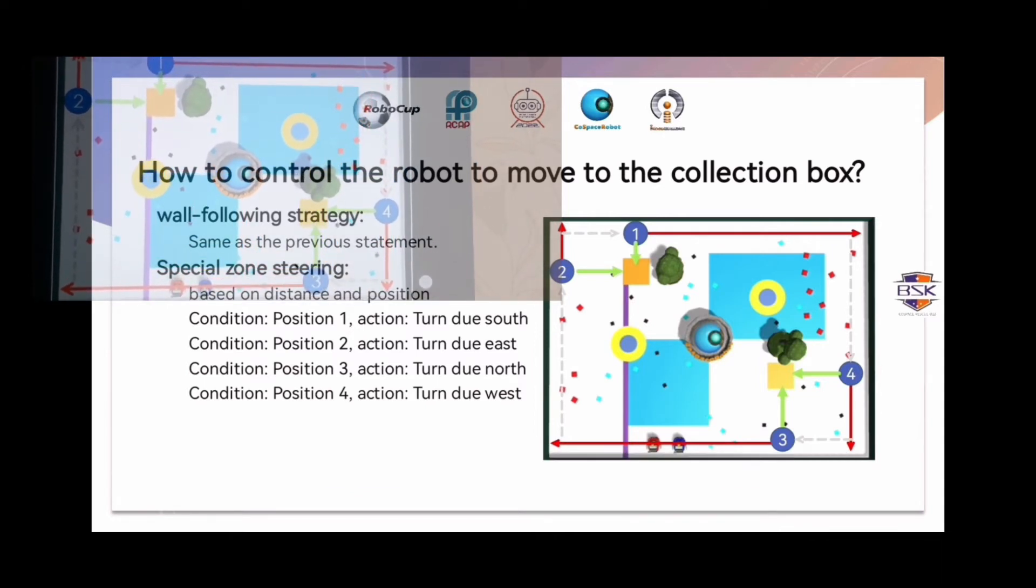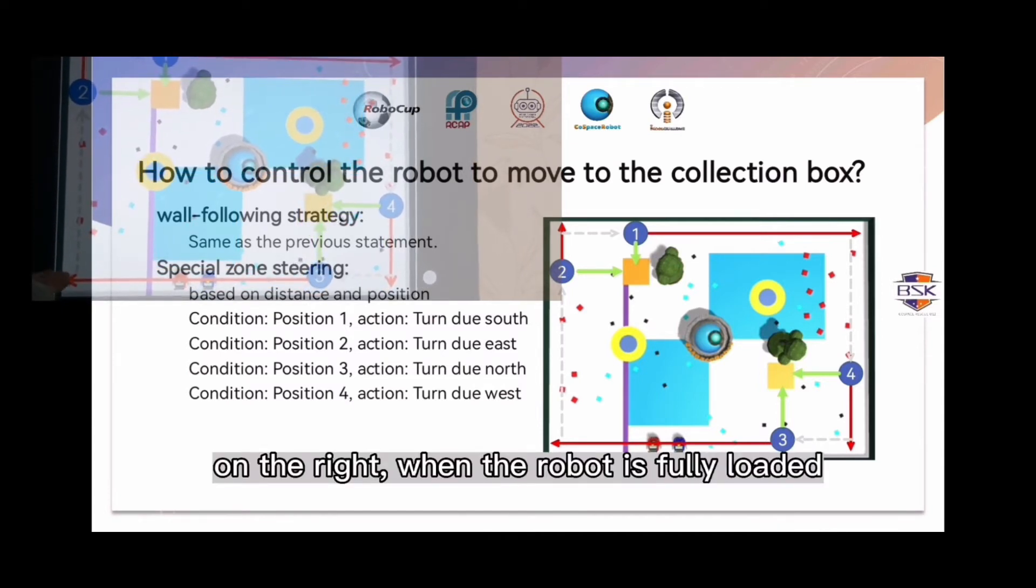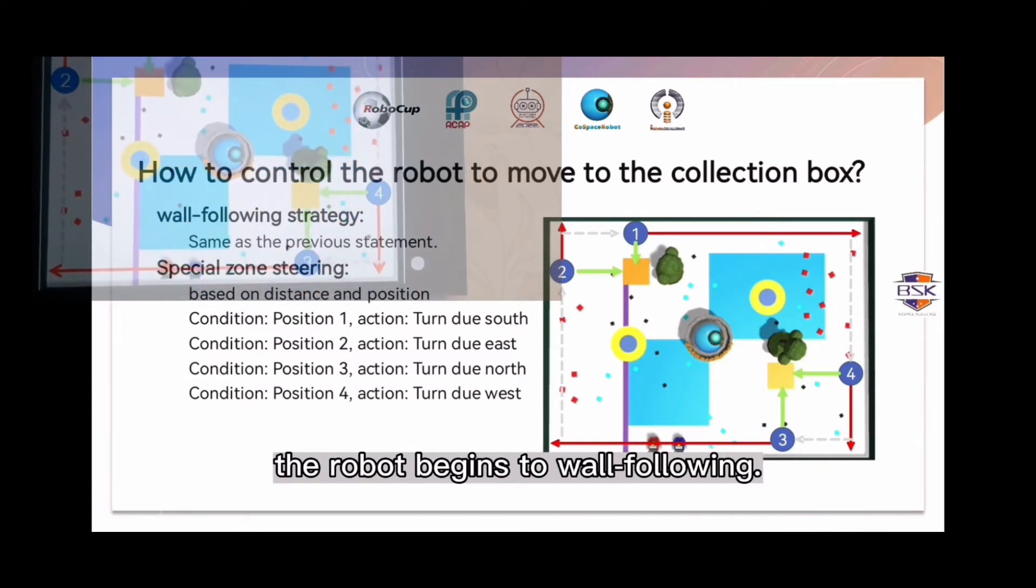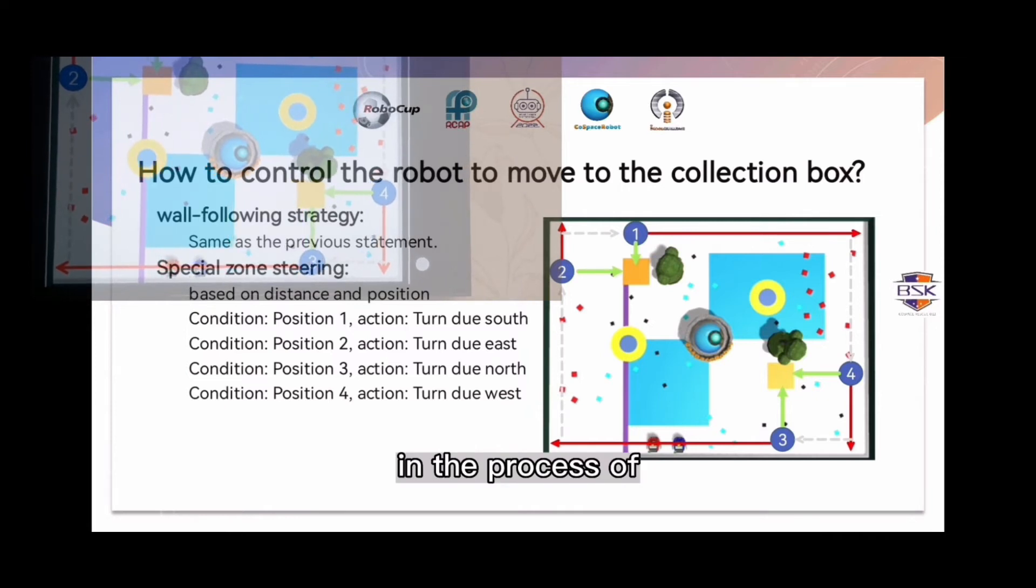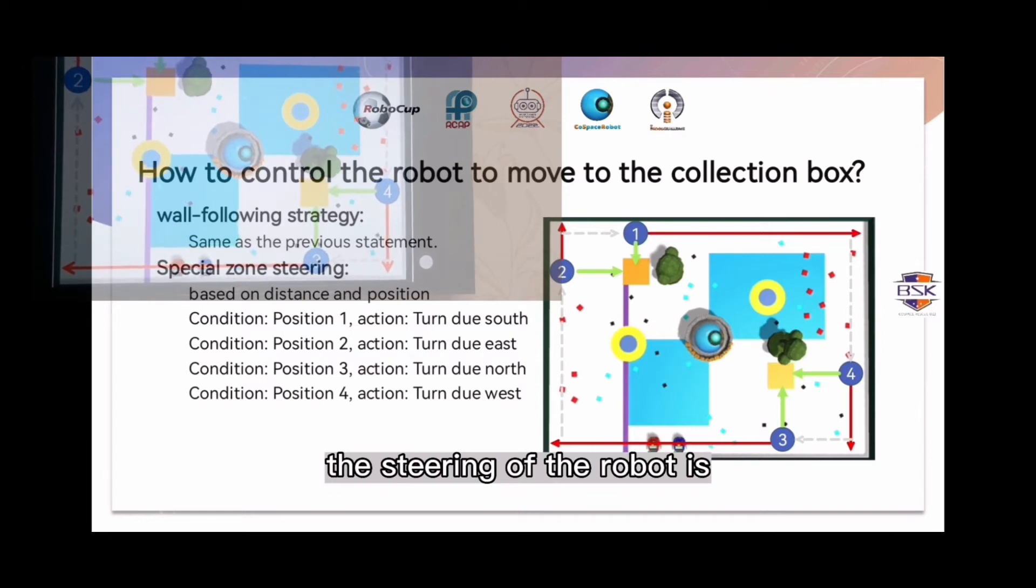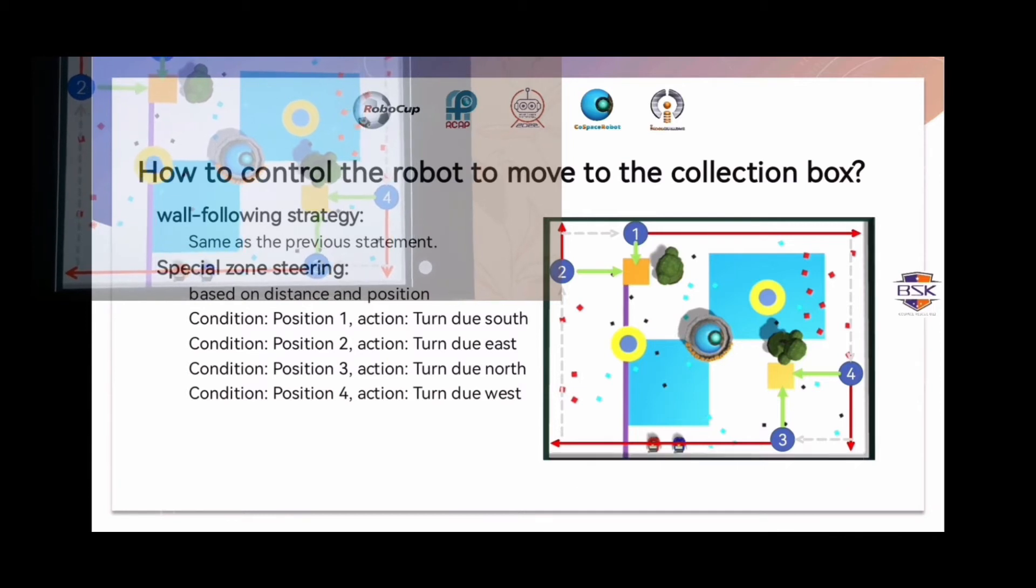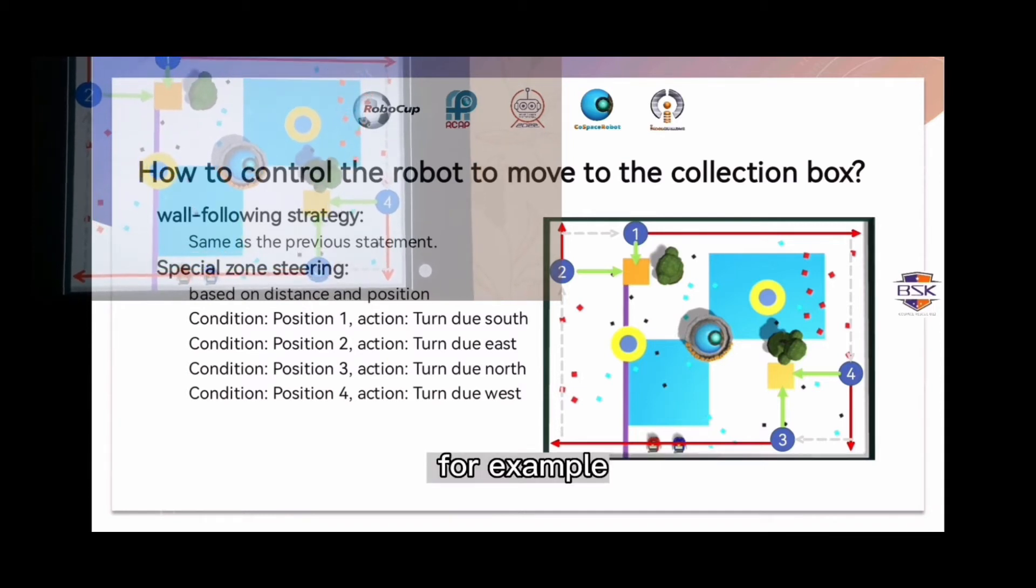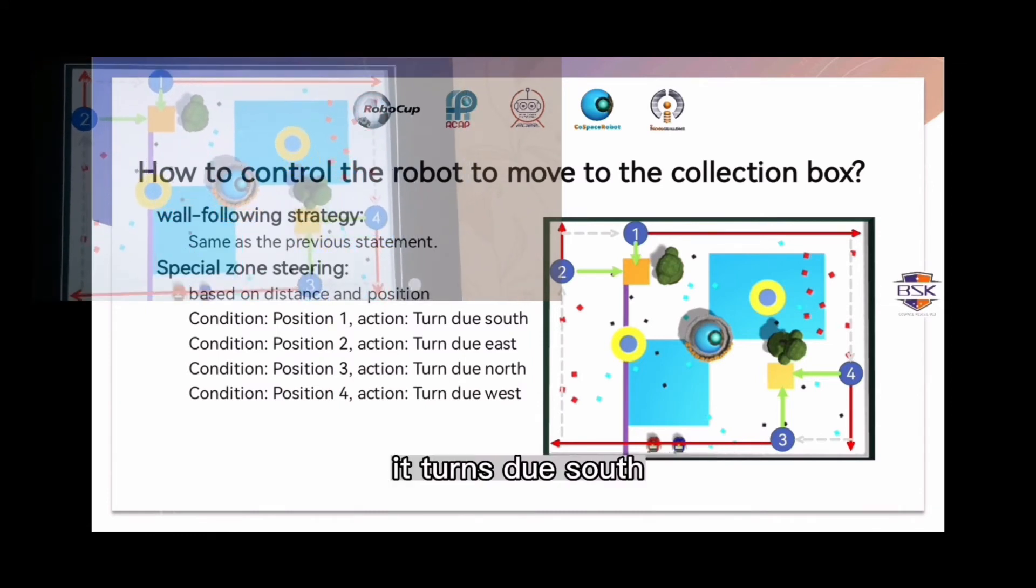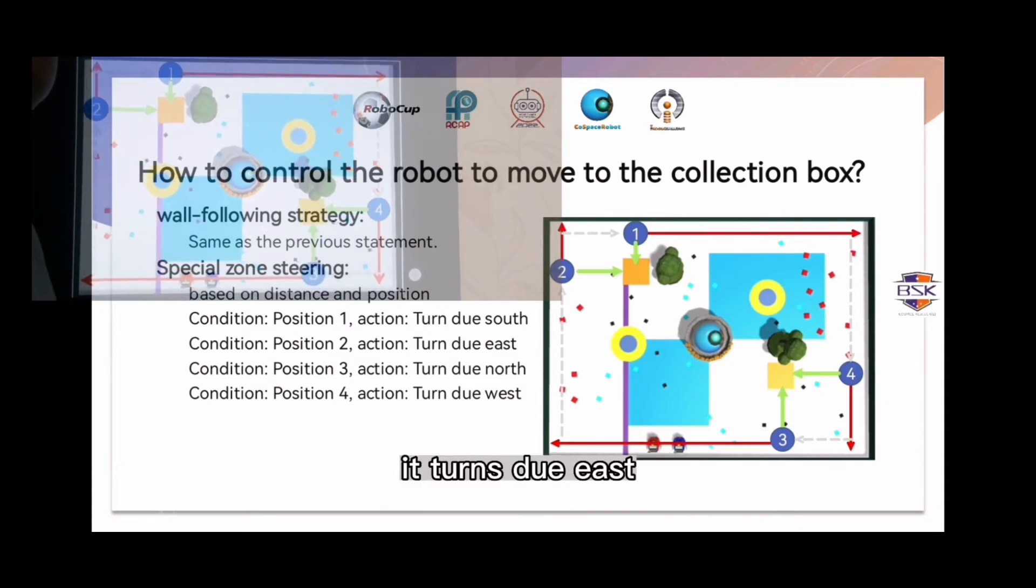As shown in the figure on the right, when the robot is fully loaded, the robot begins to walk following the wall. In the wall following, the steering of the robot is controlled based on the eigenvalue of distance. For example, if the robot reaches position 1, it turns north. If the robot reaches position 2, it turns east.